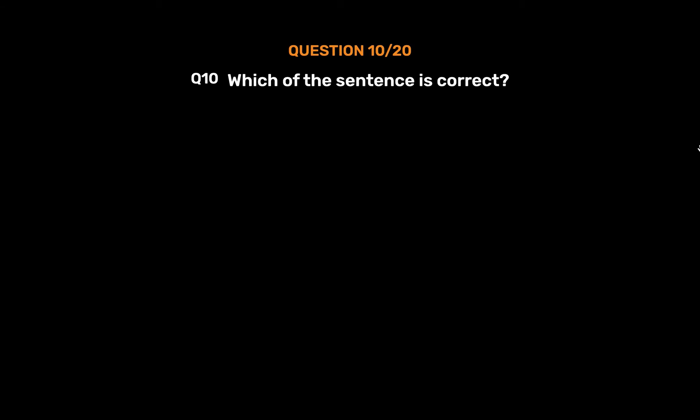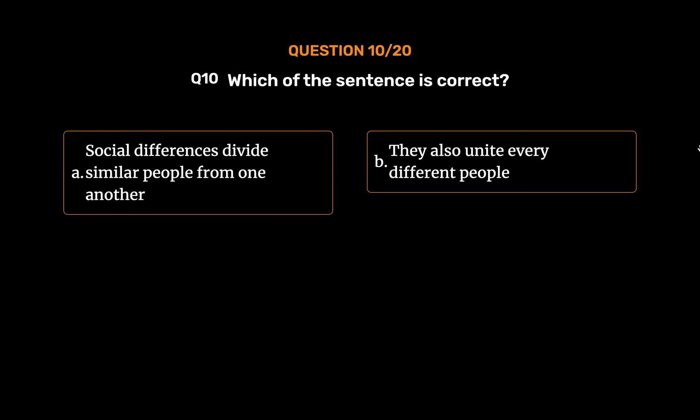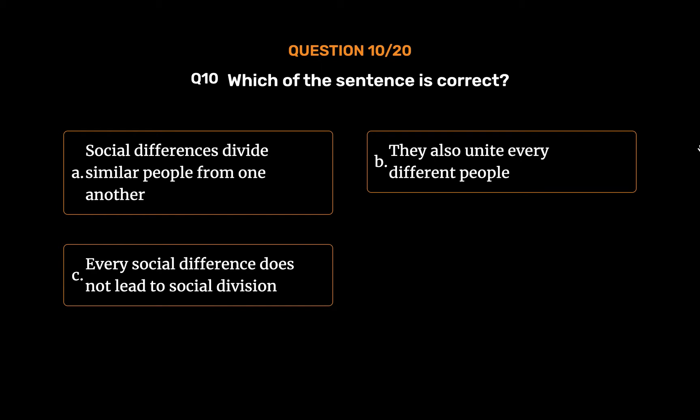Question number 10. Which of these sentences is correct? Option A: Social differences divide similar people from one another. Option B: They also unite very different people. Option C: Every social difference does not lead to social division. Option D: All of them.